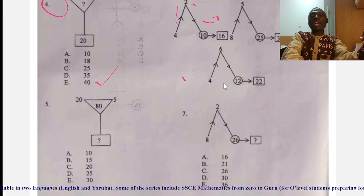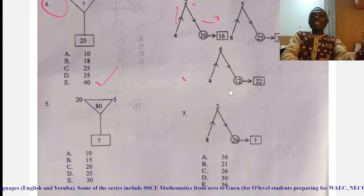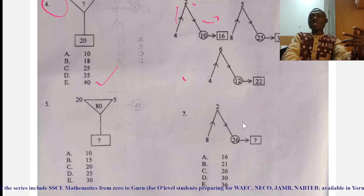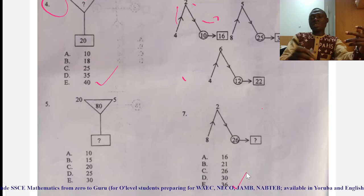Now, let us do this guy. We have 8 plus 2, that will give me 10. 10 plus 26, that will produce 36.